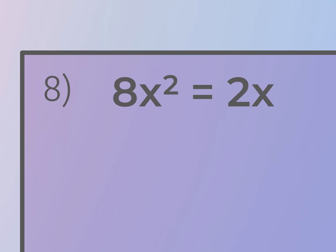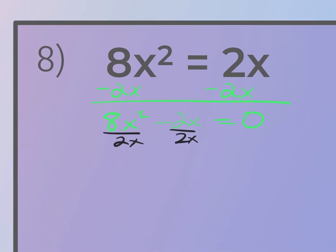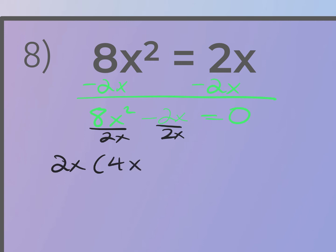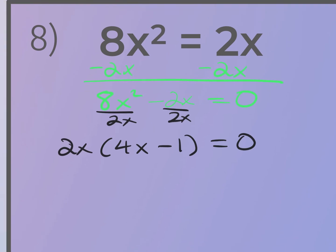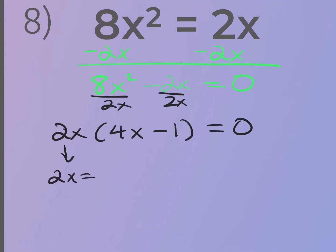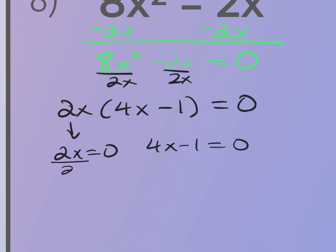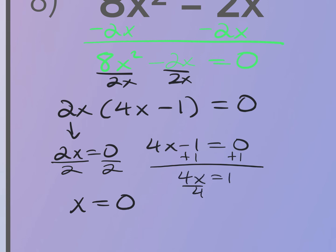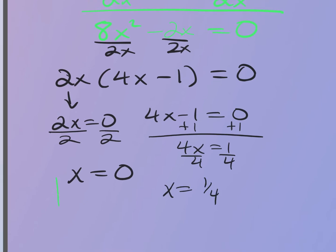For number eight, set equal to zero by subtracting 2x: 8x² − 2x = 0. Factor out the GCF of 2x to get 2x(4x − 1) = 0. Setting each factor equal to zero: 2x = 0 gives x = 0, and 4x − 1 = 0 gives x = 1/4. So my two solutions are x = 0 and x = 1/4.